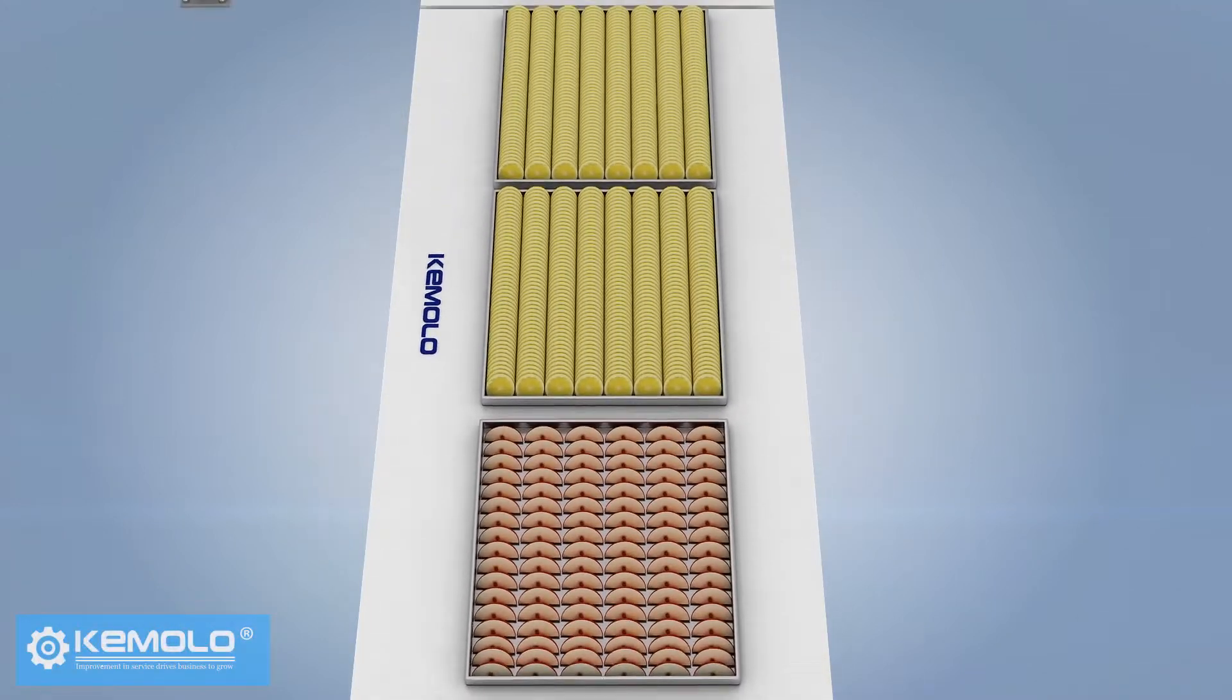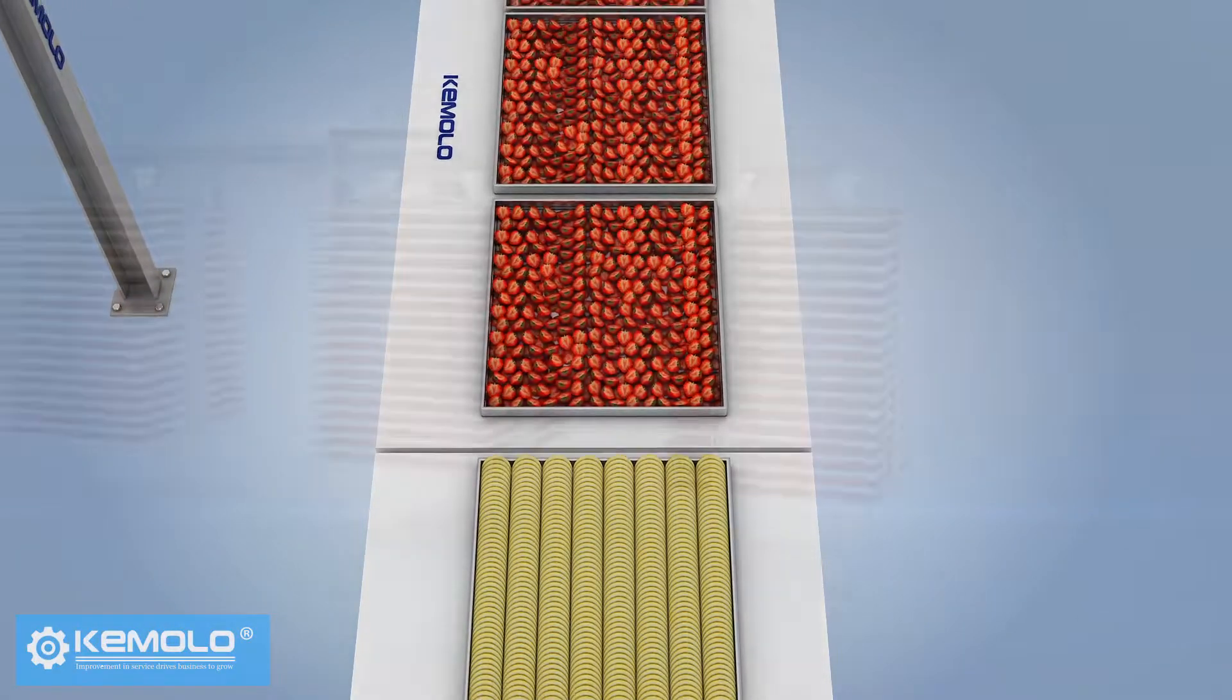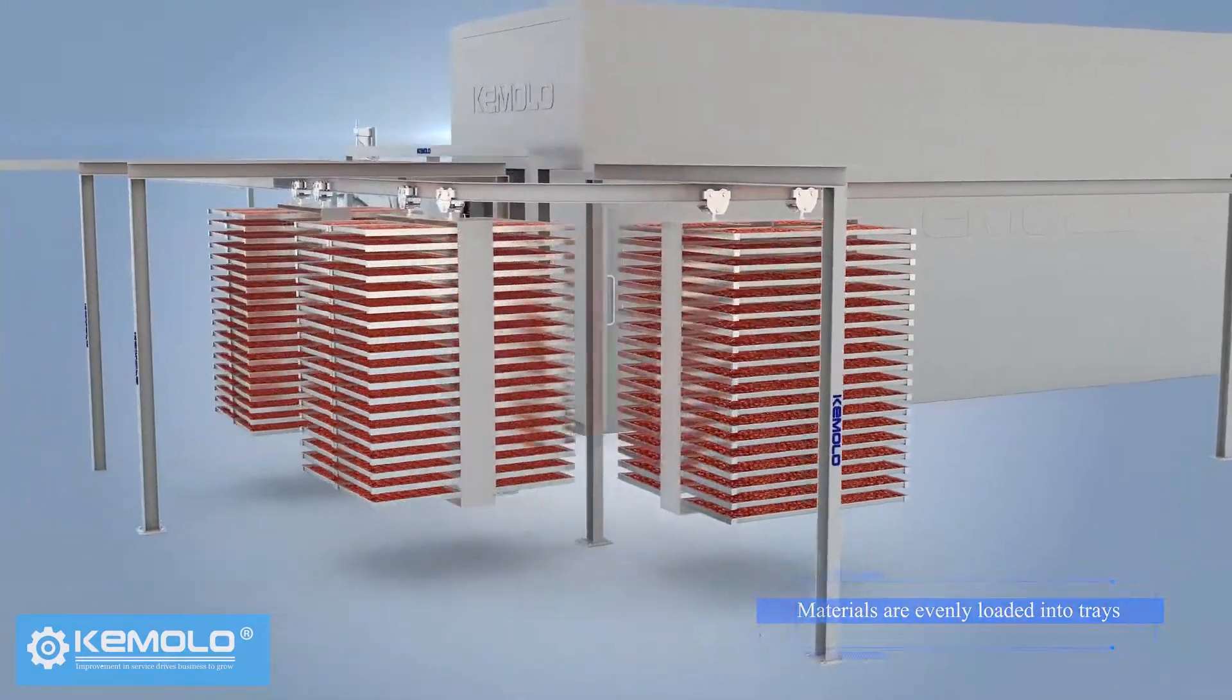First, wash and slice the fruits, vegetables or other pre-processed materials evenly and load them into product trays.